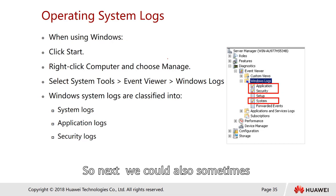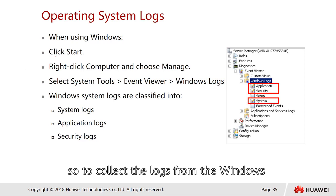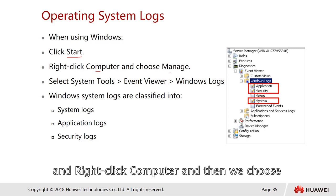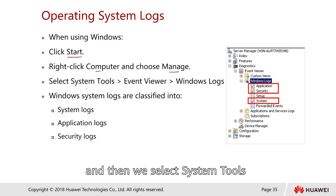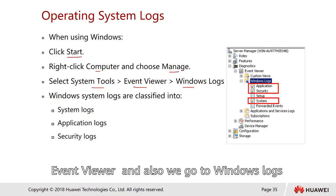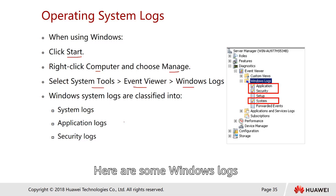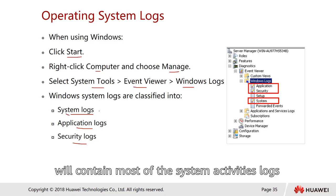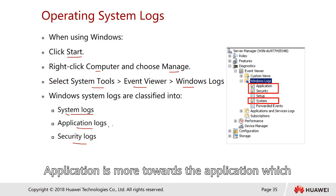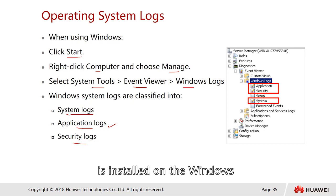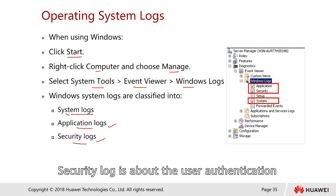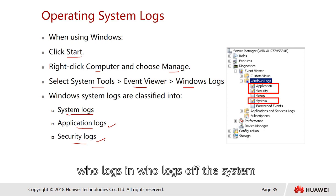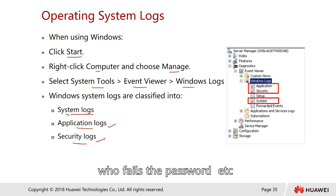We can also collect operating system logs — for example from Windows. To collect Windows logs, click Start, right-click Computer, choose Manage, then select System Tools > Event Viewer > Windows Logs. Windows logs are classified into system logs, application logs, and security logs. System logs contain most system activity logs, application logs are related to installed applications, and security logs cover user authentication — who logged in, who logged off, and failed password attempts.